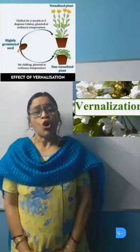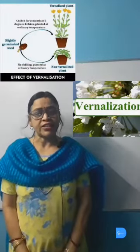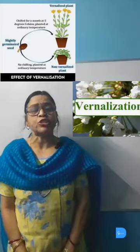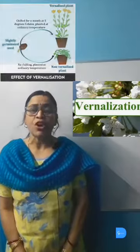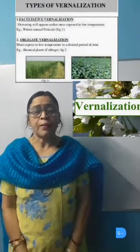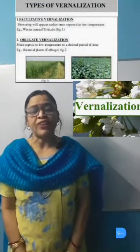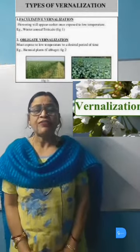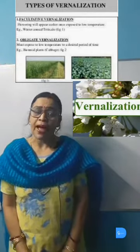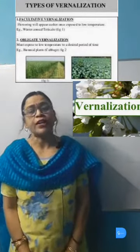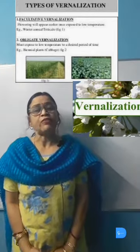Vernalization can be of two types. First, obligate vernalization, in which the plants are subjected to lower temperature for a set amount of time, e.g. cabbage. Second, facultative vernalization, in which early flowering occurs in plants when they are exposed to lower temperature, e.g. annual winter Triticale.